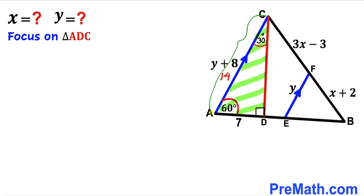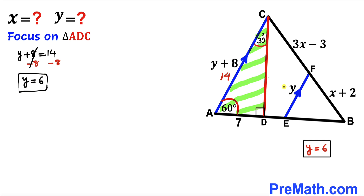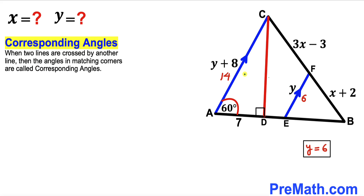Since the longest leg is twice the smallest leg in a 30-60-90 triangle, and AD is 7 units, AC equals 14 units. We also know AC is represented by Y plus 8, so we can equate: Y plus 8 equals 14. Subtracting 8 from both sides gives us Y equals 6 units. Therefore EF, represented by Y, is also 6 units.